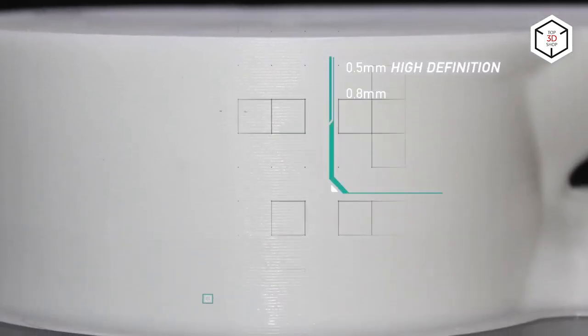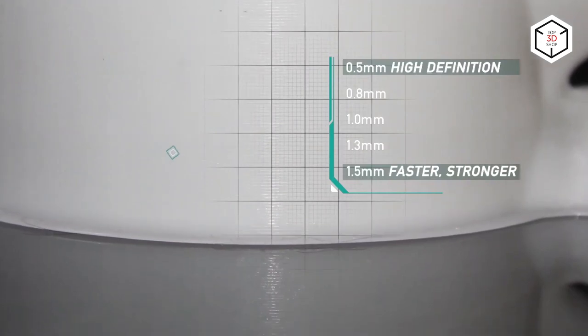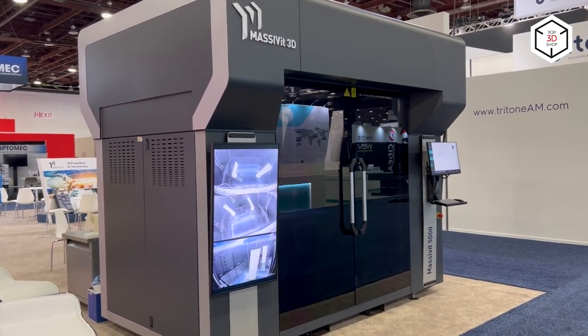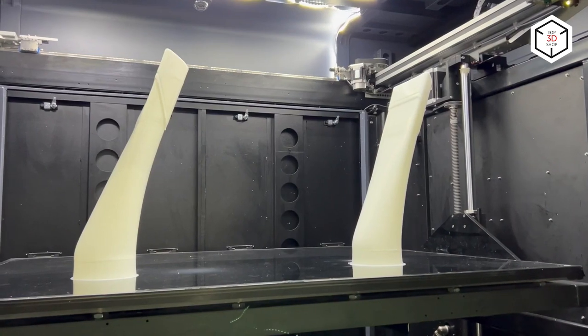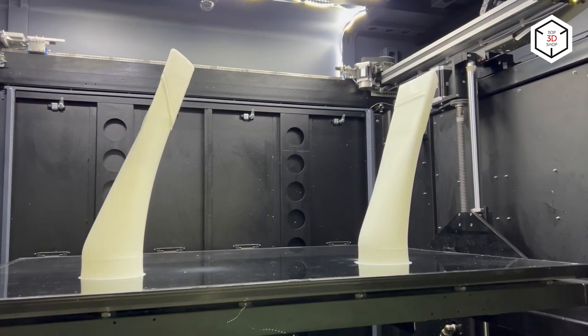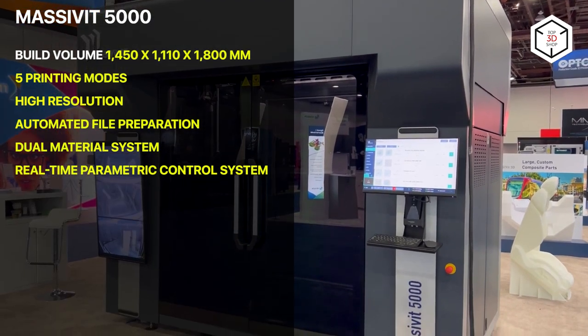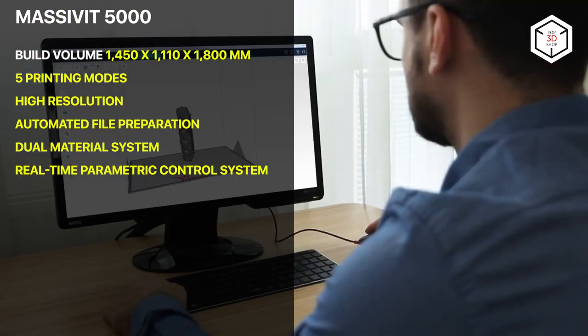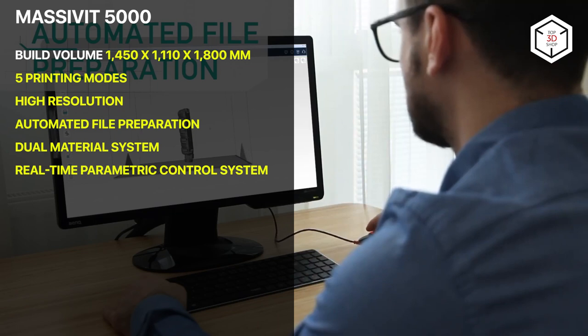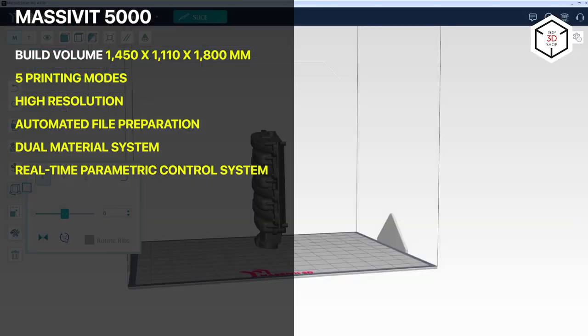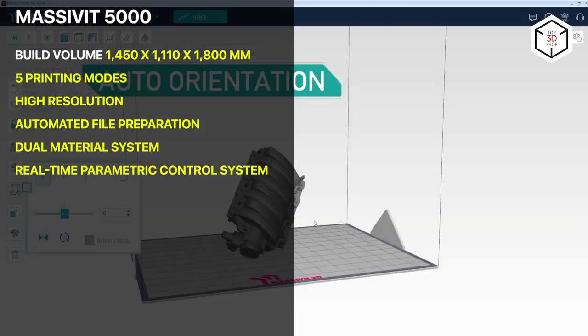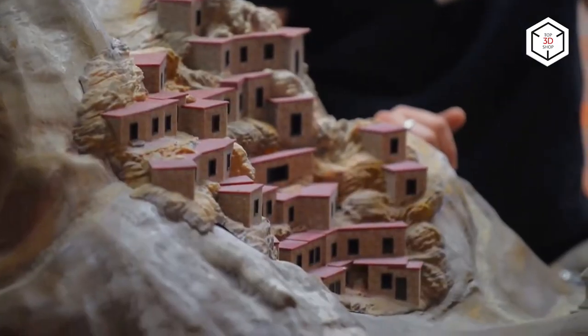The Massive IT 5000 focuses on improving the performance and resolution of 3D printing. Equipped with two print heads, this 3D printer can quickly and simultaneously print two objects. Featuring a build volume of 1450 by 1110 by 1800 millimeters, the print speed is up to 35 centimeters per hour along the Z-axis. The 3D printer is equipped with the real-time parametric control system that uses machine vision.